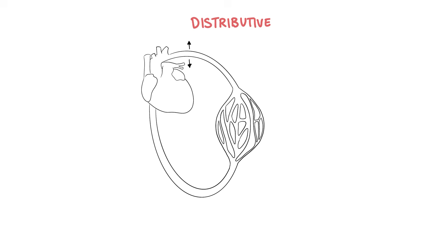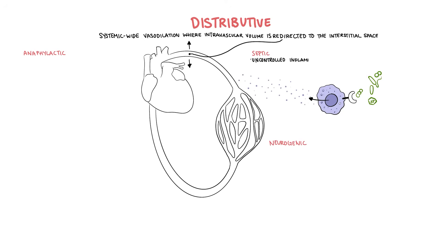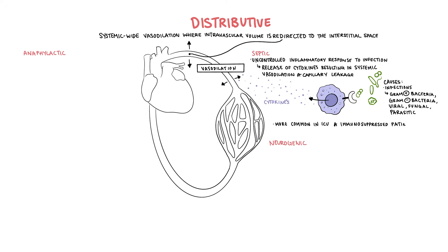The final type of shock is distributive shock and this is caused by a system-wide vasodilation where intravascular volume is redirected to the interstitial space. The three subtypes are septic, anaphylactic and neurogenic shock. Septic shock is when you have uncontrolled inflammatory response to infection resulting in systemic vasodilation and capillary leakage. Infections including gram-positive bacteria, gram-negative bacteria, viral, fungal and parasitic infections can cause this. Septic shock is more common in ICU and immunosuppressed patients.